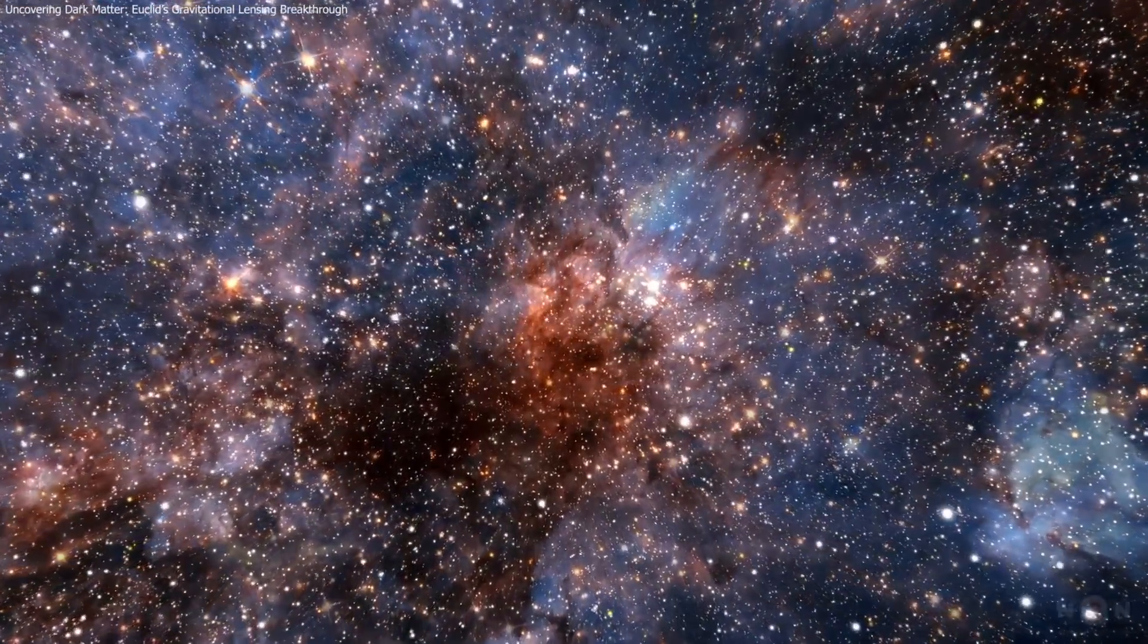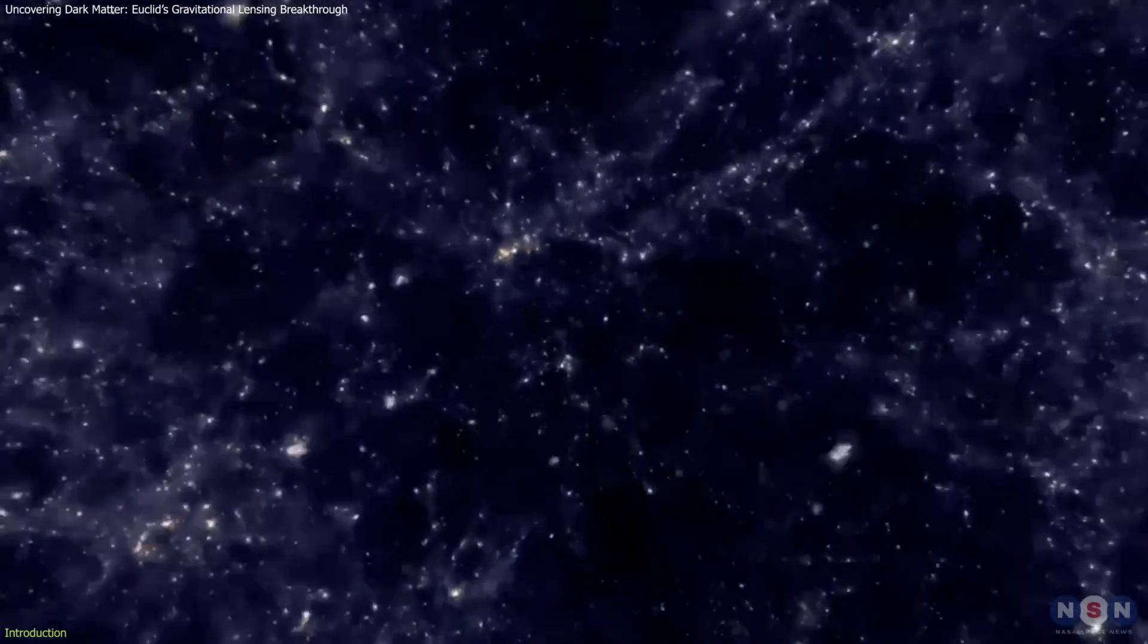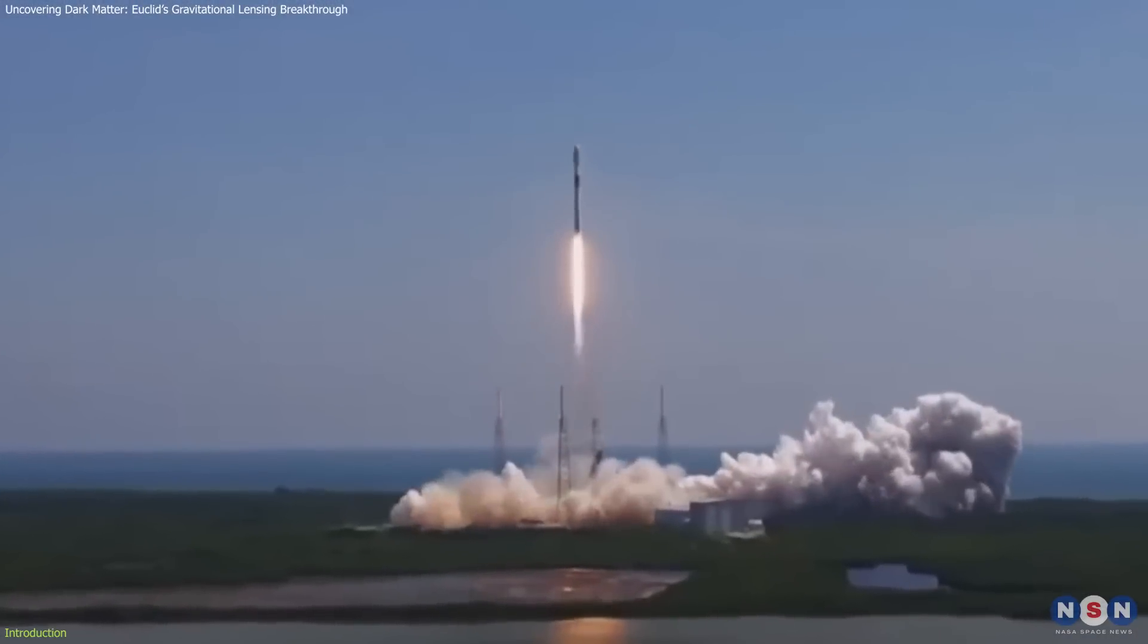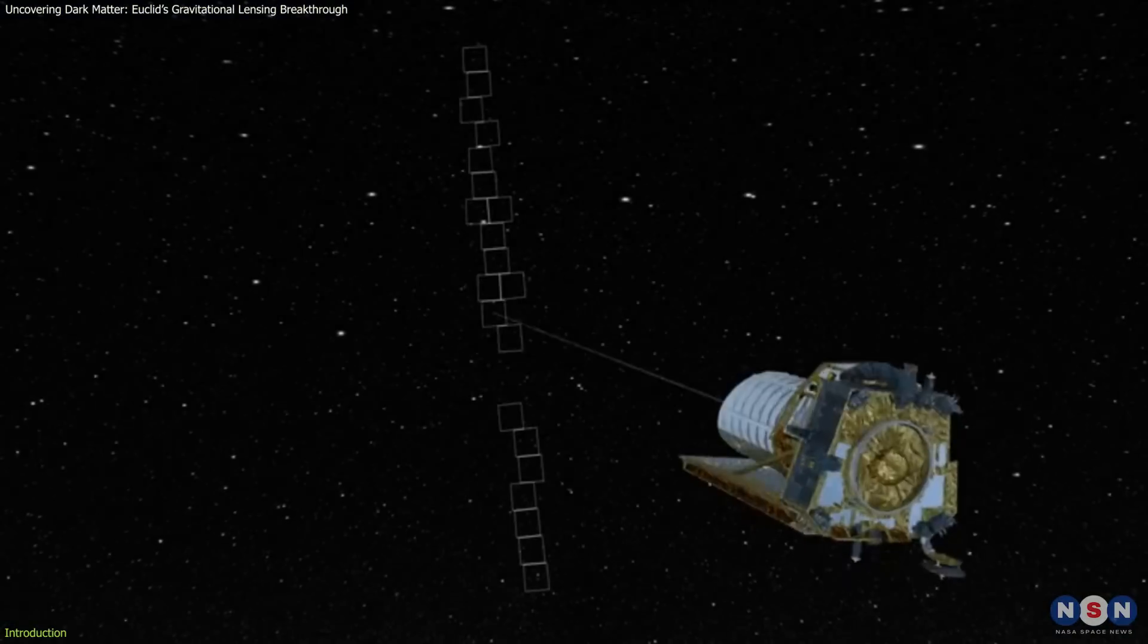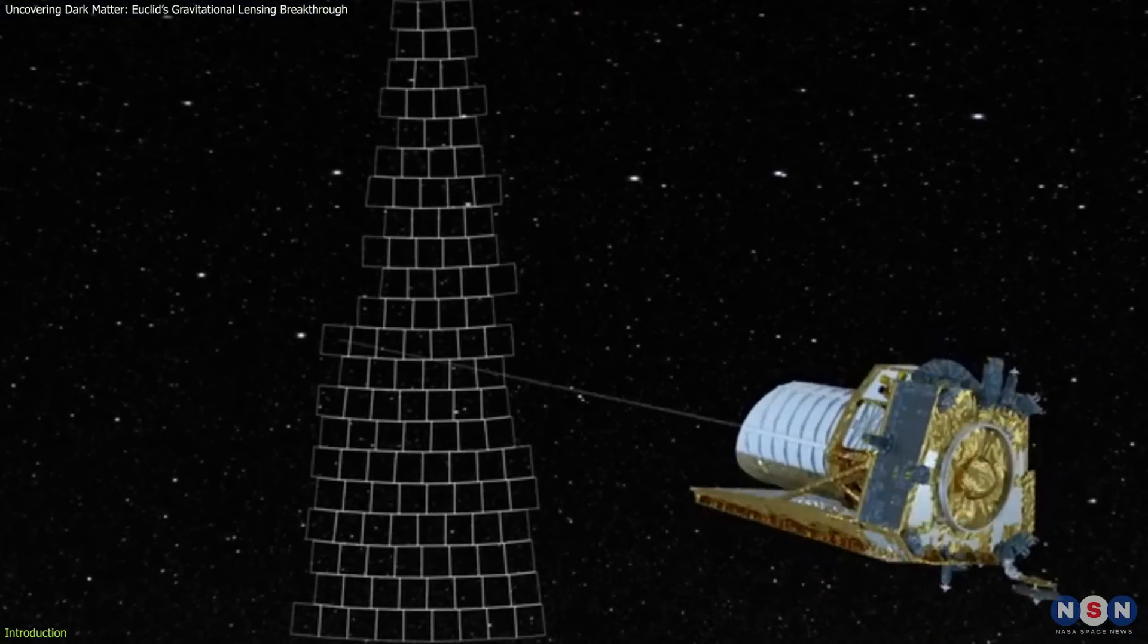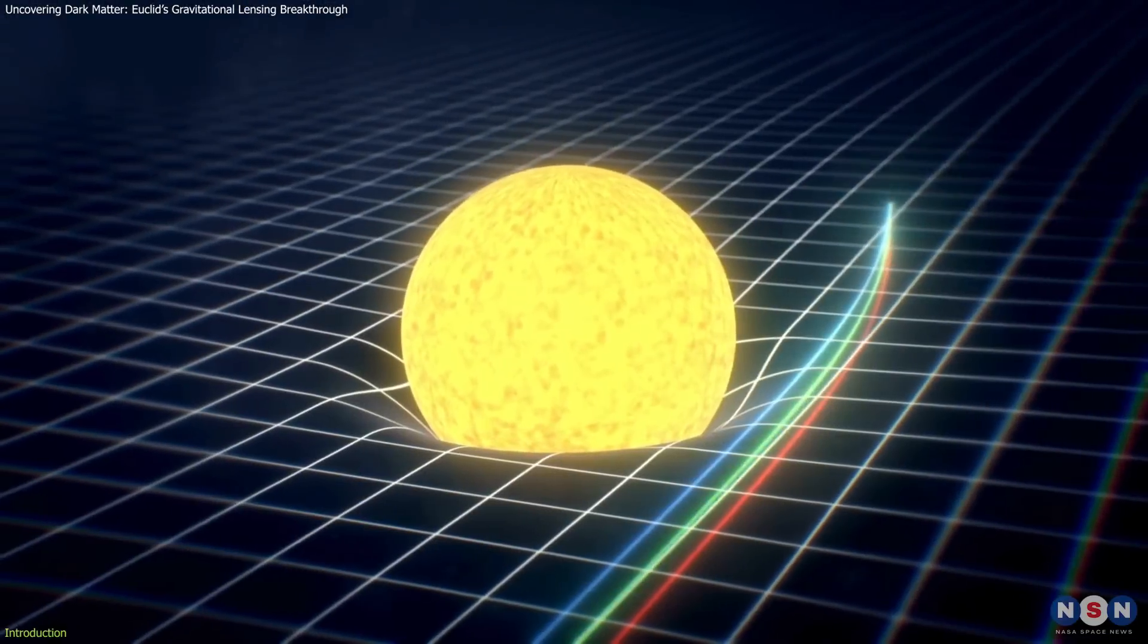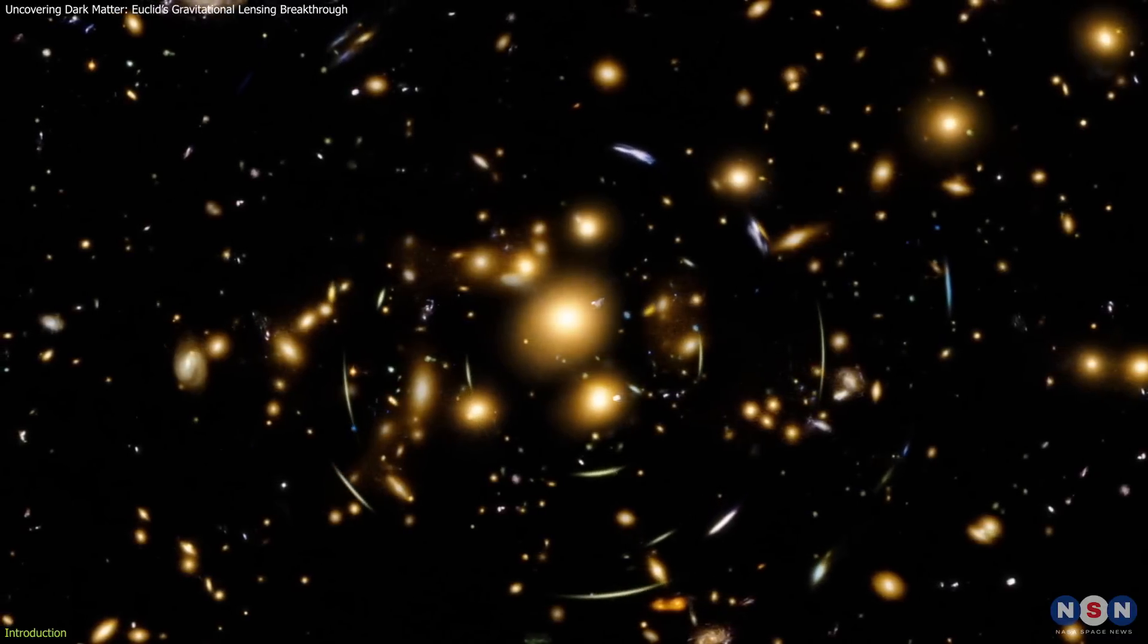The cosmos holds countless mysteries, with dark matter and dark energy making up 95% of its content. To explore these unseen forces, the European Space Agency launched the Euclid mission in July 2023, aiming to map the universe's structure and uncover its hidden components. A key focus is detecting strong gravitational lenses, phenomena that validate Einstein's theory and act as cosmic magnifying glasses.